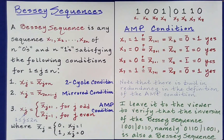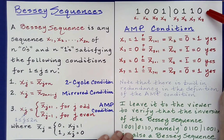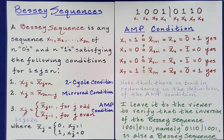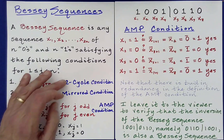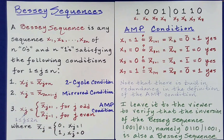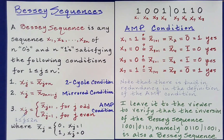I leave it to the viewer to verify that the complement of this Bessie sequence — which is simply 0, 1, 1, 0, 1, 0, 0, 1 — also satisfies the two-cycle condition, the mirrored condition, and the AMP condition, which is what is needed for it to be a Bessie sequence.